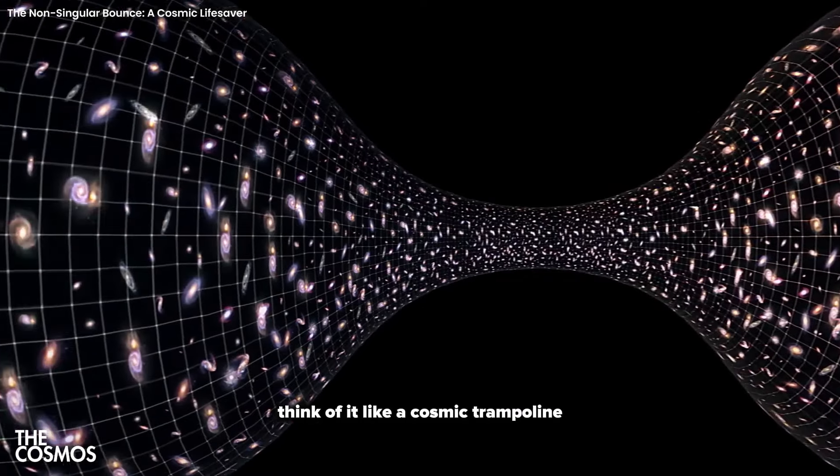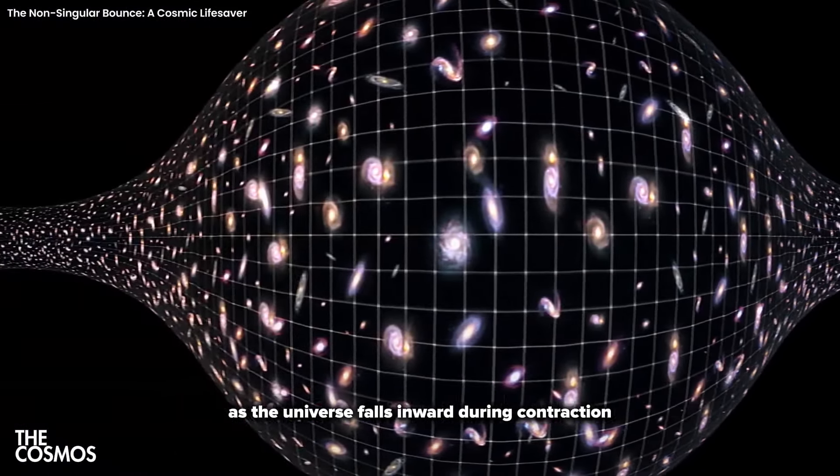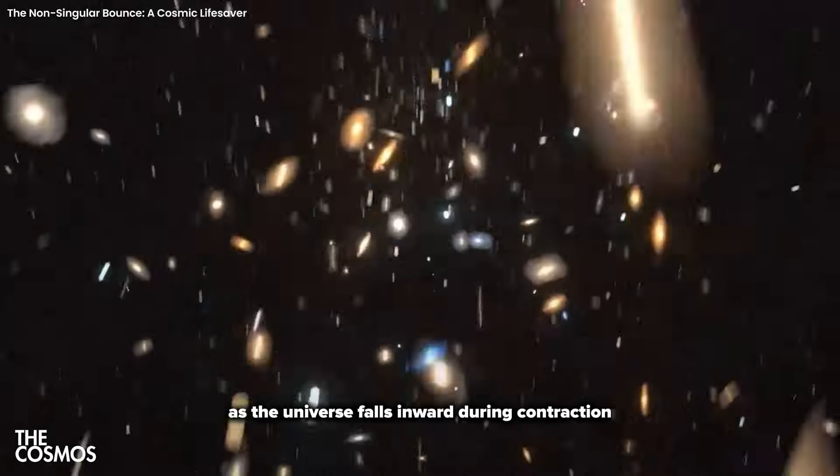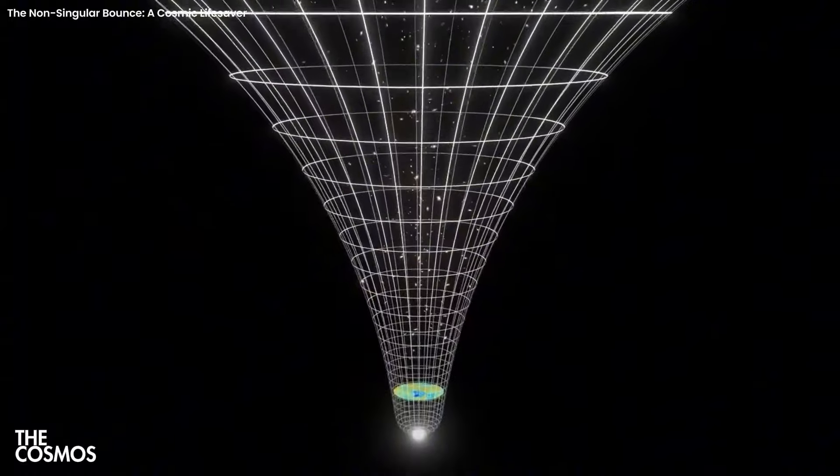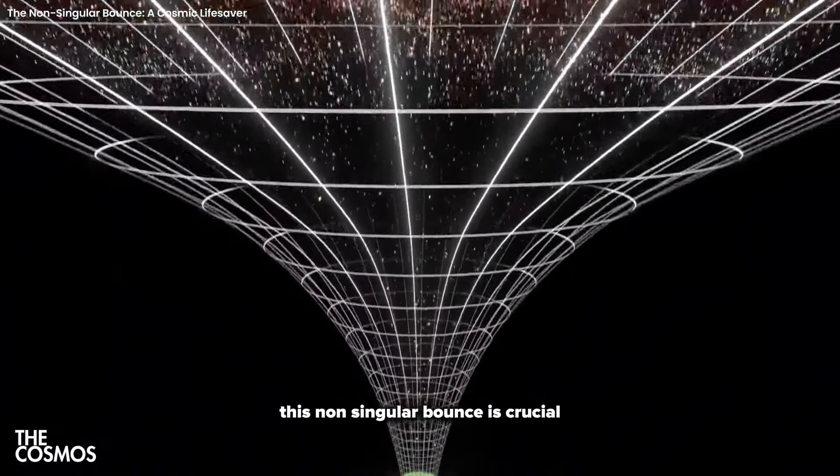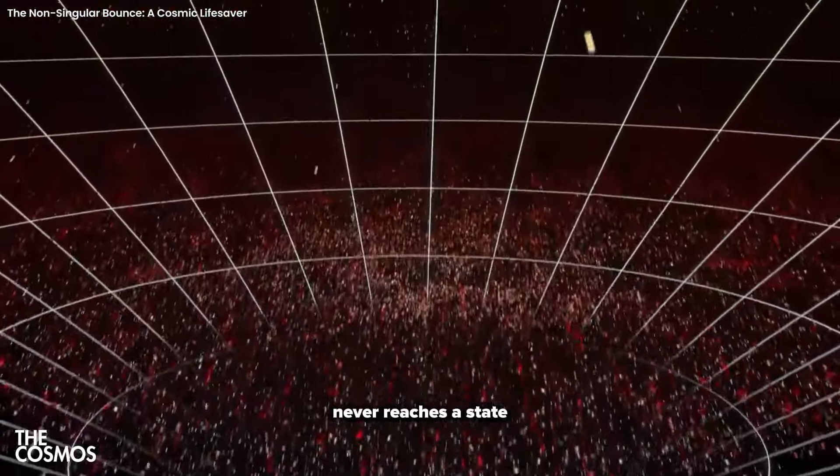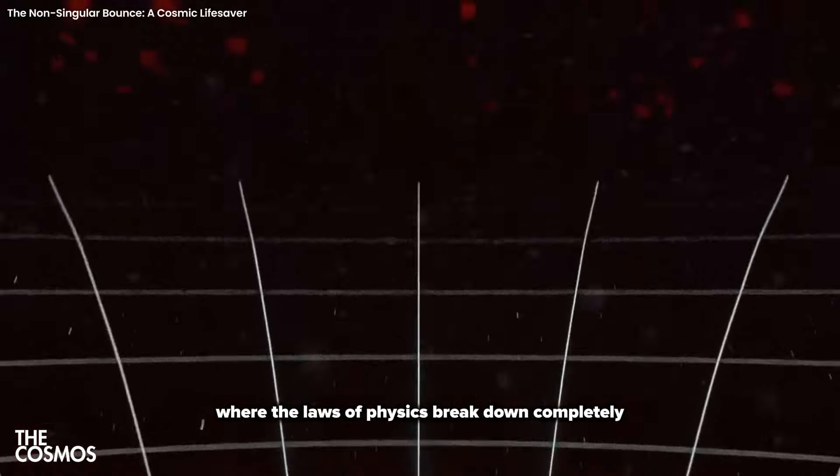Think of it like a cosmic trampoline. As the universe falls inward during contraction, it hits a springy quantum surface that propels it back out into expansion. This non-singular bounce is crucial because it means that the universe never reaches a state where the laws of physics break down completely.